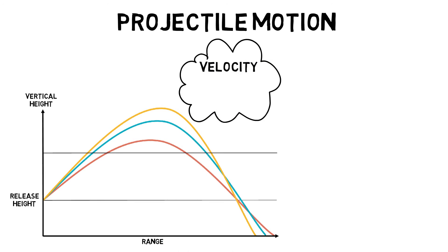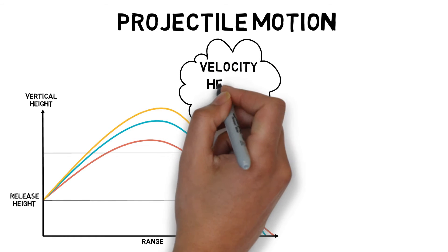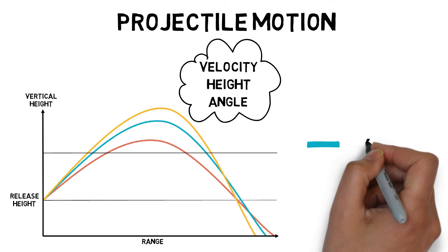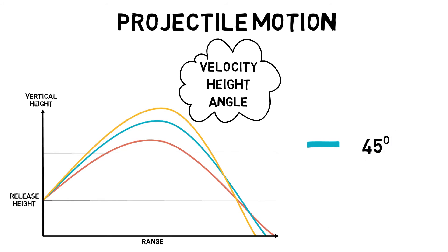Velocity of release, height of release, and angle of release. If the release height is equal to the landing height, then the optimum release angle is 45 degrees, such as a lofted pass in football.